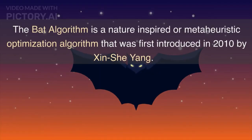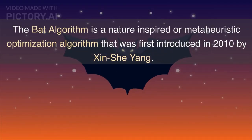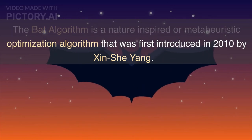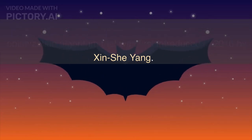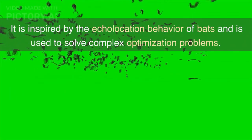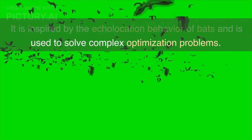The BAT algorithm is a nature-inspired, or meta-heuristic, optimization algorithm that was first introduced in 2010 by Xin Shi Yang. It is inspired by the echolocation behavior of bats and is used to solve complex optimization problems.